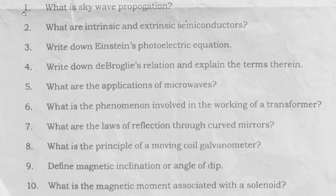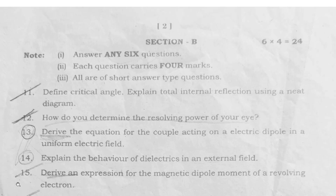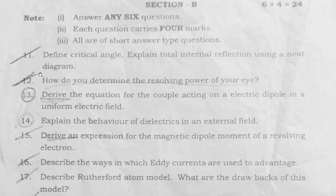These are the 10 VSAQs you can see on the screen: Question 1 through Question 10. Now, this is Section B, in which there are 8 SAQs, out of which you have to answer any six.